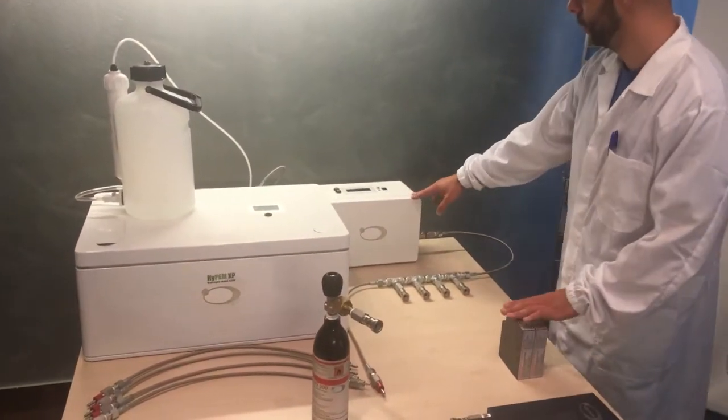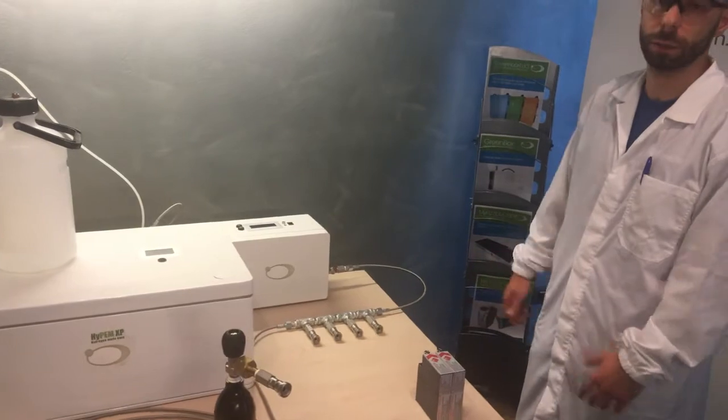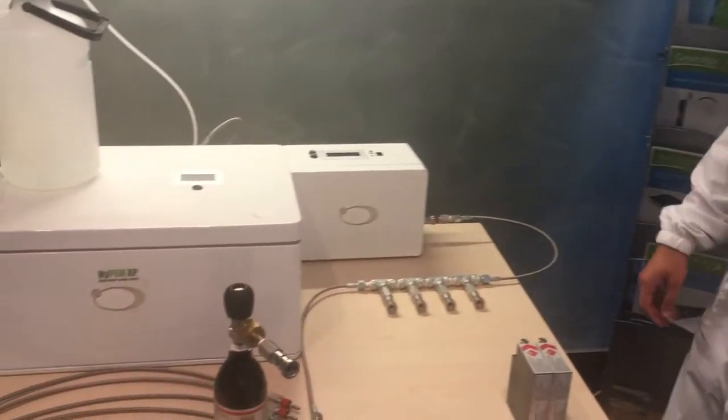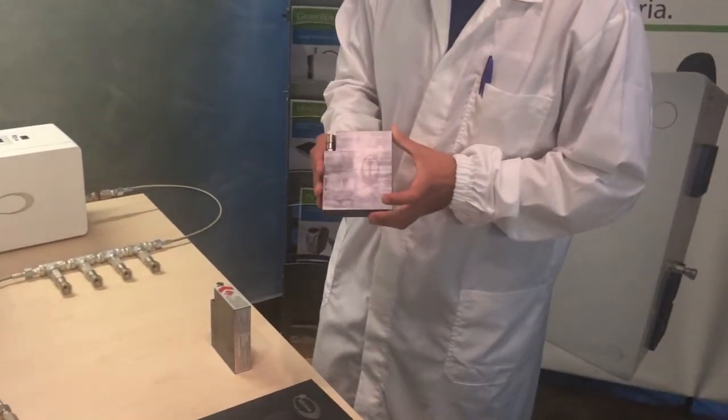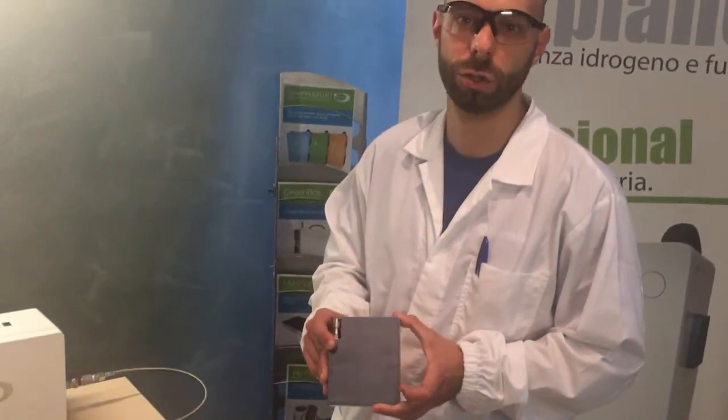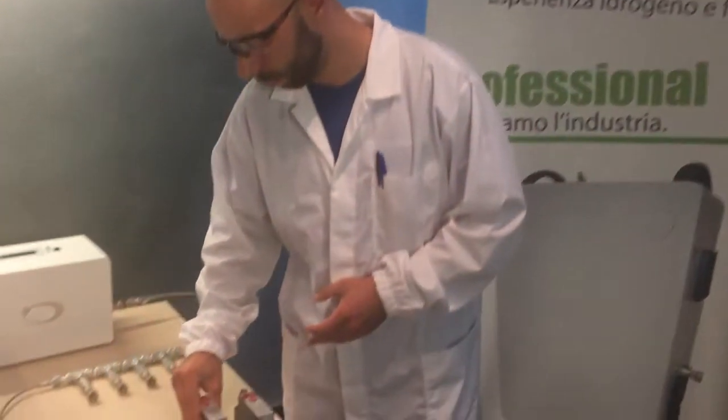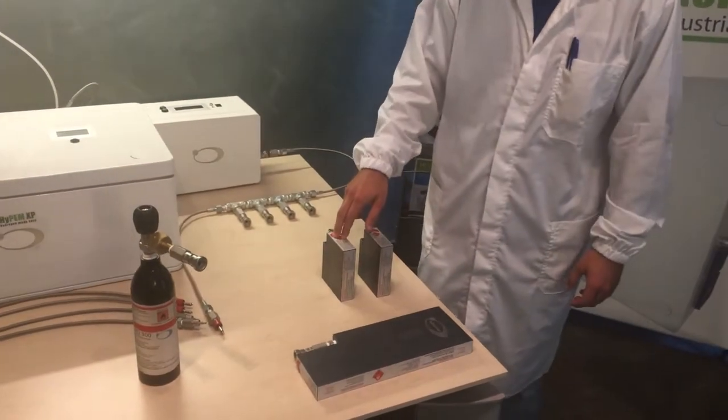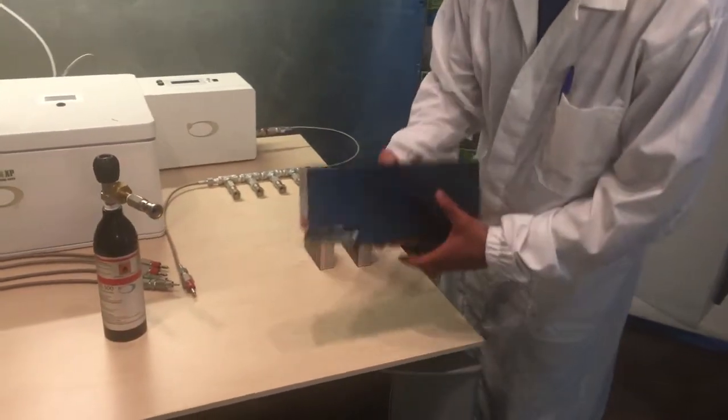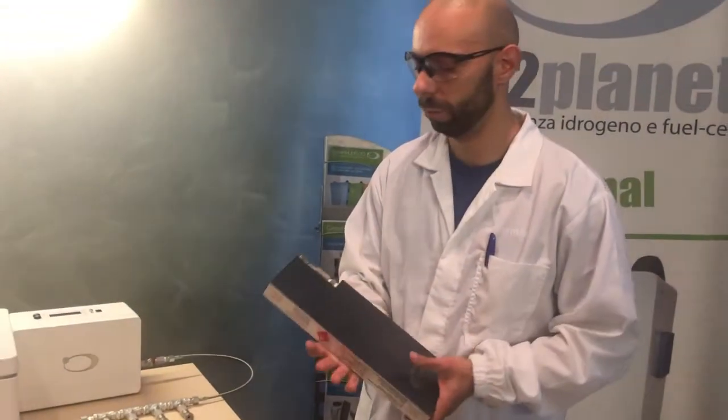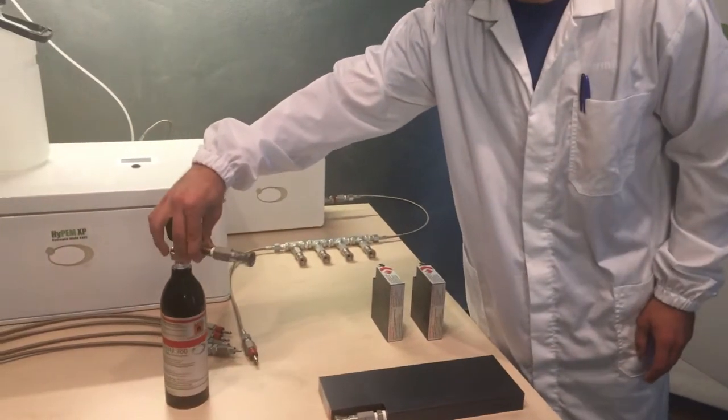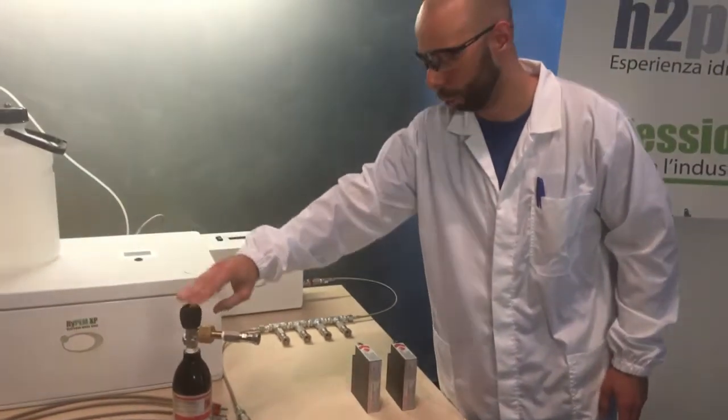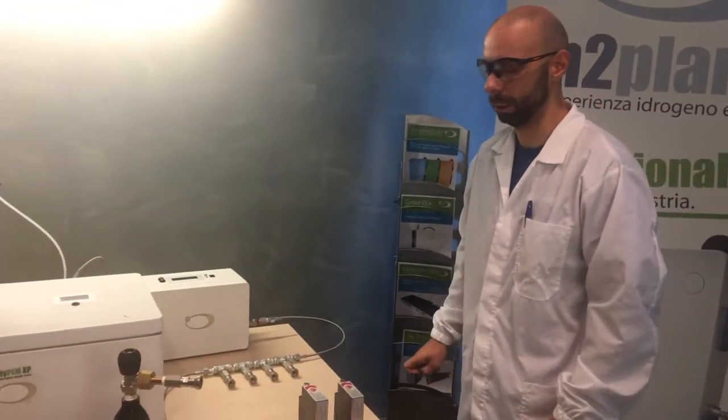This device was made in order to automatically charge the metal hydride cartridge like this one. This is our product myH280 and it can store up to 80 liters of hydrogen. This is the 350 slim version and it can store 350 liters of hydrogen, and this is the myH2300 which can also store 300 liters of hydrogen.